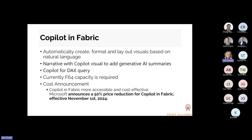Let's talk about Copilot licensing. Fabric is licensed at a capacity level with levels varying from F2 all the way up past F64. Currently, F64 capacity is required for Copilot, which is an expensive capacity. However, Microsoft has recently announced they're going to make it more accessible and cost-effective — they've announced a 50% price reduction for Copilot in Fabric, effective November 1st. Although Copilot is still being rolled out and not everybody has access yet, it has to be specifically enabled with an F64 capacity.